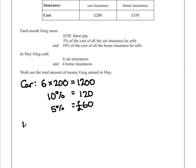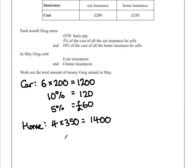Next is the same idea, but with home insurance instead. He sells 4 home insurances, so that's 4 lots of £350. 4 times 350 is £1,400. So this time he gets 10%, so to find 10% of a number we divide by 10, which means he gets £140 from the home insurance.